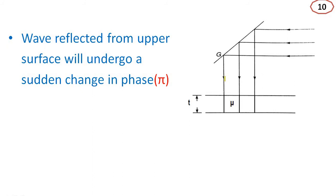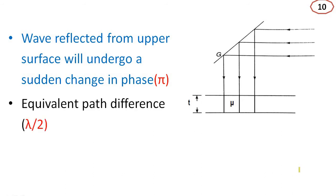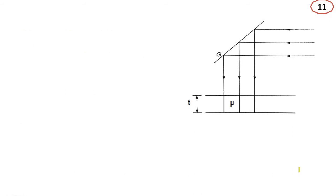Now let us consider the wave reflected from the upper surface. The wave is incident on the upper surface. When reflected from the upper surface, there is a phase change of pi. So the wave reflected from the upper surface undergoes a sudden change in phase of pi, which is equivalent to an additional path difference of lambda by 2.